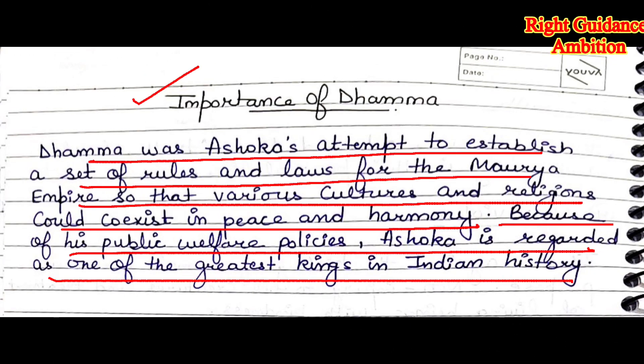Now let's discuss the importance of Ashoka's policy. Dhamma was Ashoka's attempt to establish a set of rules and laws for the Mauryan Empire, so that various cultures and religions could coexist in peace and harmony. All the people in Ashoka's empire could live in peace. The principles encouraged respecting each person regardless of religion. In order to achieve harmony, Ashoka pleaded for tolerance of various religious sects.